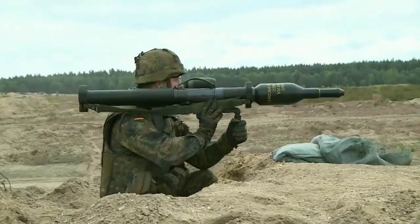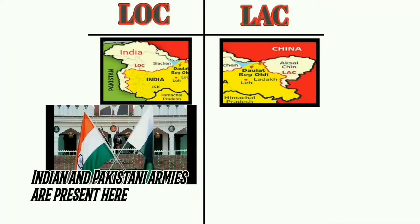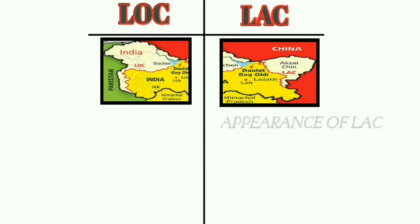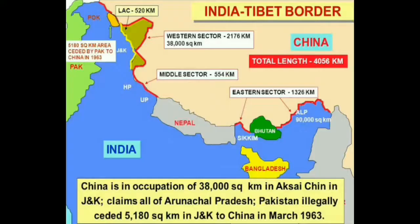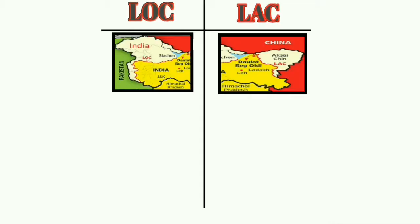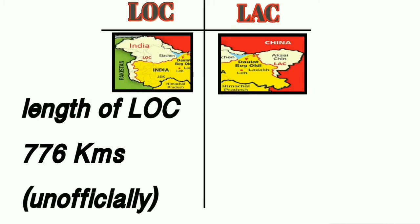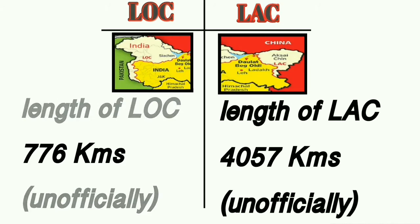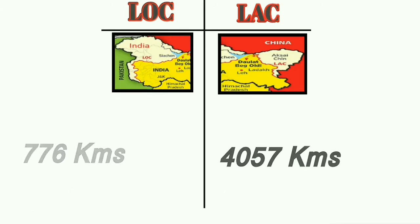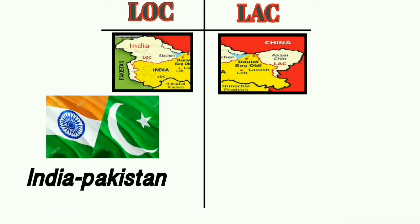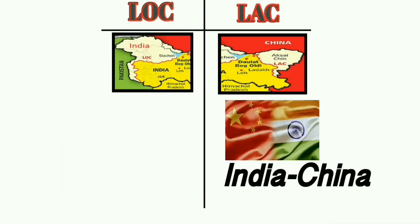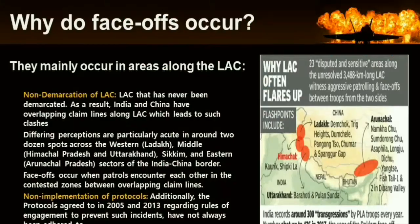The appearance of the LOC: it is clearly demarcated by militaries and a lot of activities — face-to-face confrontation, firings, etc. — take place; Indian and Pakistani armies are present here. The appearance of the LAC: these are big empty regions and nearly 50 to 100 kilometers distance is maintained between the Indian and Chinese armies. The length of the LOC is 776 kilometers (unofficial) and the length of the LAC is 4,057 kilometers (unofficial). The LOC is the border between India and Pakistan, while the LAC is the border between India and China.